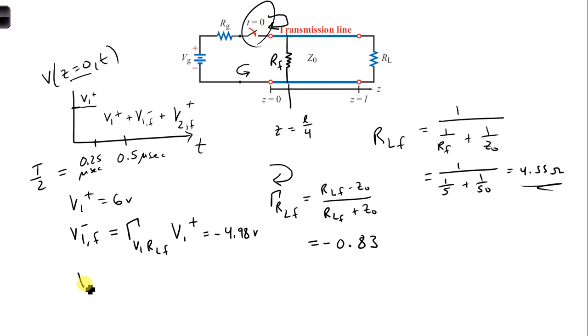So we also need to calculate V2 plus F. And that is the voltage reflection coefficient at the generator times V1 F minus. And we plug in 1 fifth times minus 4.98, and that gives us minus 1 volt.